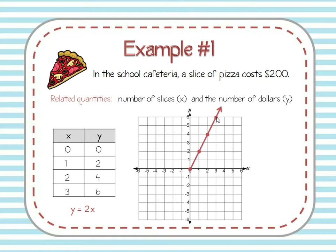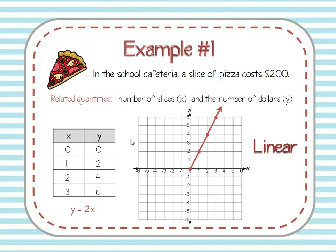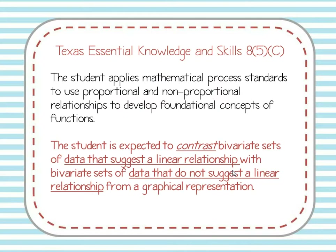When X is three, Y is six — three pieces of pizza, six dollars — so I plot a point at (3, 6). Now I can draw a line to show that this relationship continues. I could extend the line to figure out how much it would cost for 21 slices of pizza. When we look at that graph, we get a straight line. So we can call this a linear relationship — two related values, a table, an equation, and a straight-line graph.